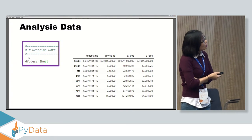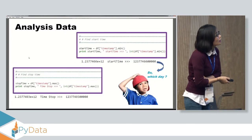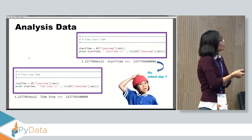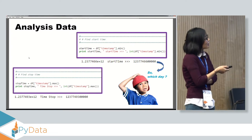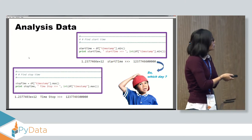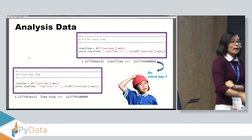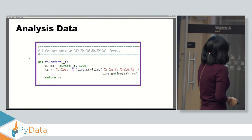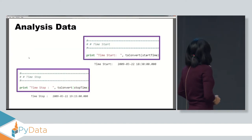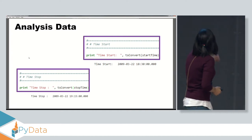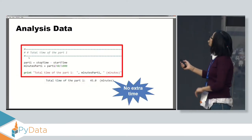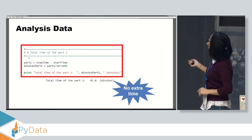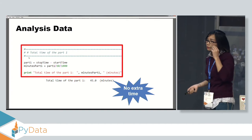Some people asked me when the game began. We know that the start of the game means the first time we got data from the sensor. So we call min of timestamp and max of timestamp to know start time and stop time. The result is given in milliseconds, which is hard to read, so we convert it to year-month-day-hour format. The game started on 23 March 2009 at 6:30 PM and stopped the same day at 7:15 PM — a duration of 45 minutes, with some extra time.